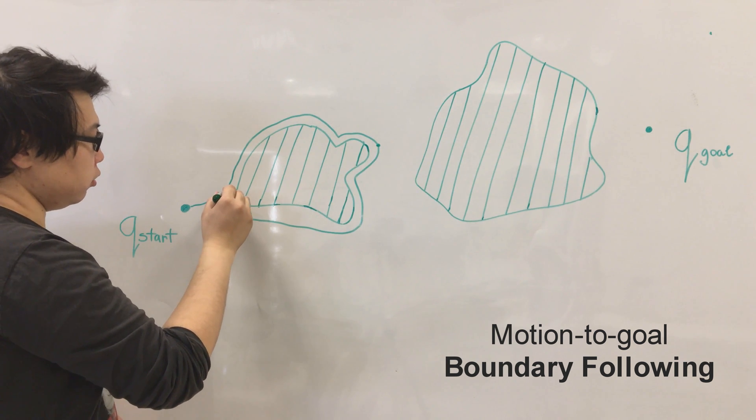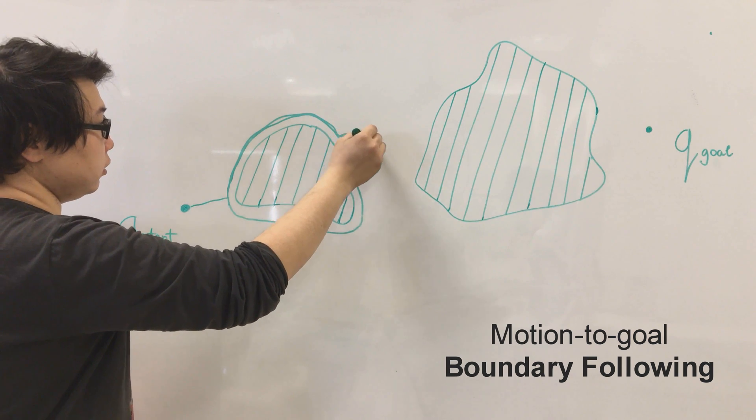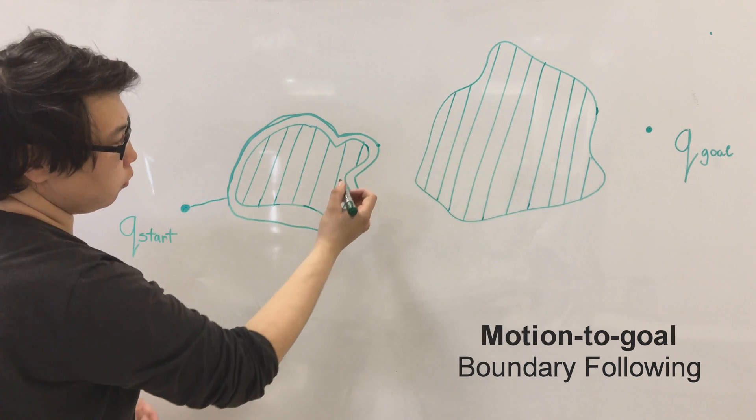So the robot has to go around one more time to that point and then we can go towards the goal one more time.